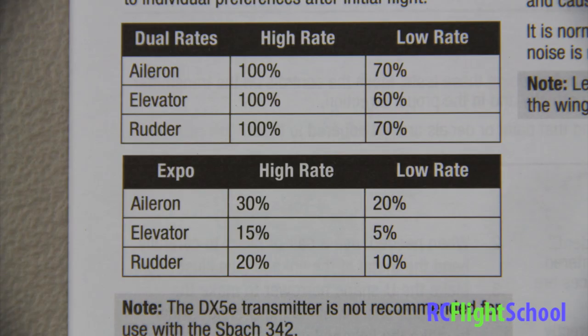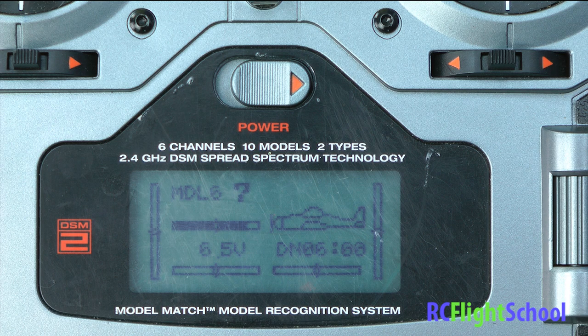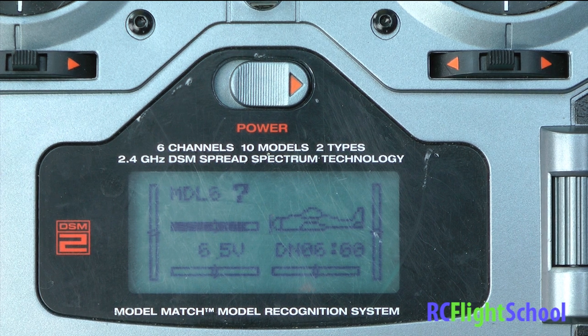I'm going to zoom in and put up a screenshot. This is the manual that comes with the SBOC, and you can see they have a table explaining dual rates and exponential with their recommended high rates and low rates. On the top box: high rate is 100% across the board, and low rates are aileron 70%, elevator 60%, rudder 70%. On the bottom box is exponential — aileron high rate 30%, low rate 20%; elevator high rate 15%, low rate 5%; rudder high rate 20%, low rate 10%. We're going to mimic these settings on the radio.